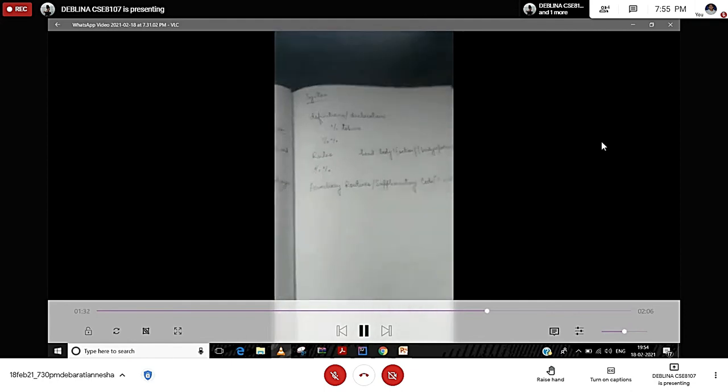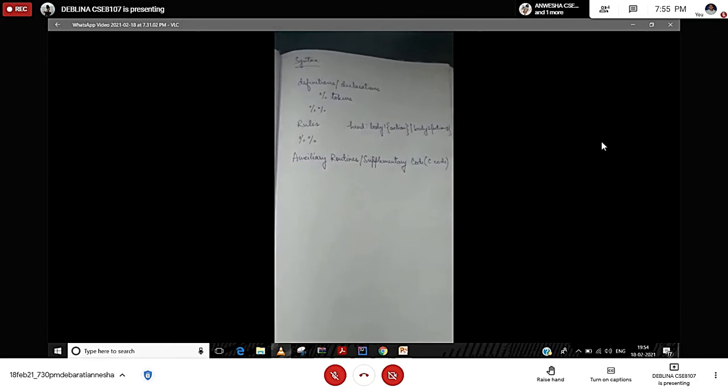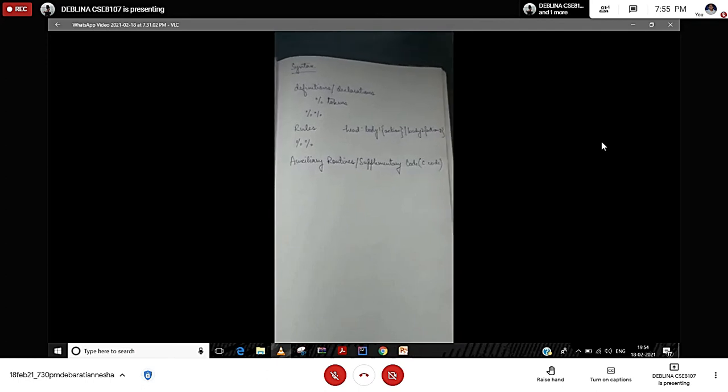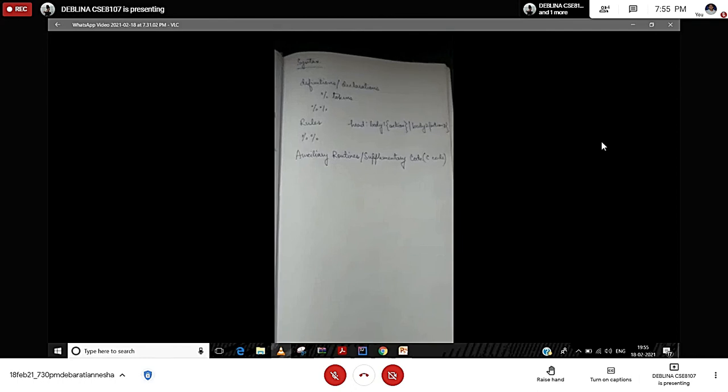Here we have the syntax of YAC. It is similar to the syntax of lex in lexical analysis. First we have the definitions and declarations in the form of tokens. Then we have some rules to be followed in YAC. The head has body 1 which performs one action, then action 2, action 3, similarly for different parts of the statement. Then we have the auxiliary routines given in the form of C code.